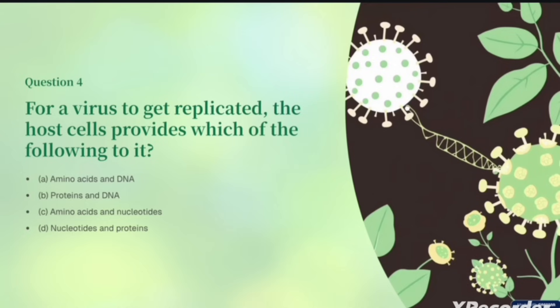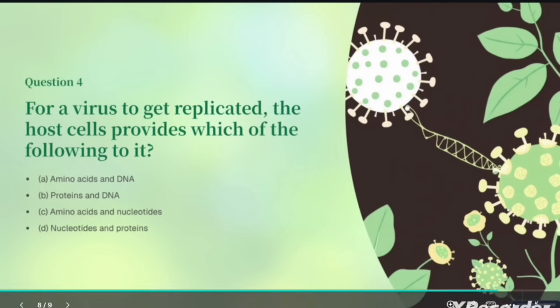Question number four: for a virus to get replicated, which of the following does the host cell provide? A virus cannot replicate on its own — it needs raw material from the host cell. The host cell provides amino acids, which are used to make viral proteins, and nucleotides, which are used to make copies of the viral genome. The correct answer is option C: amino acids and nucleotides.